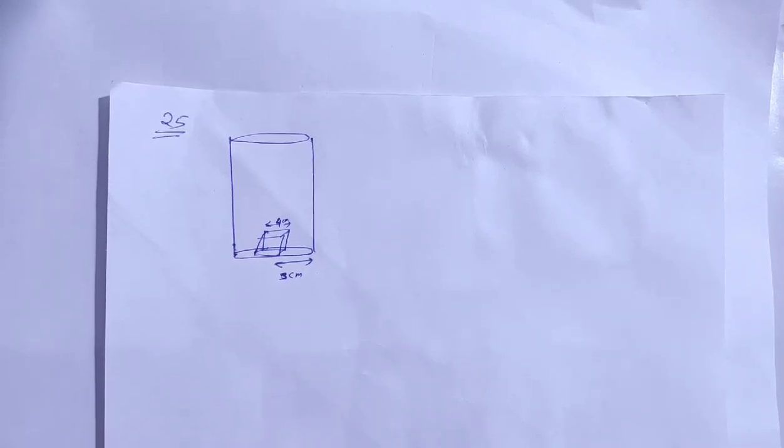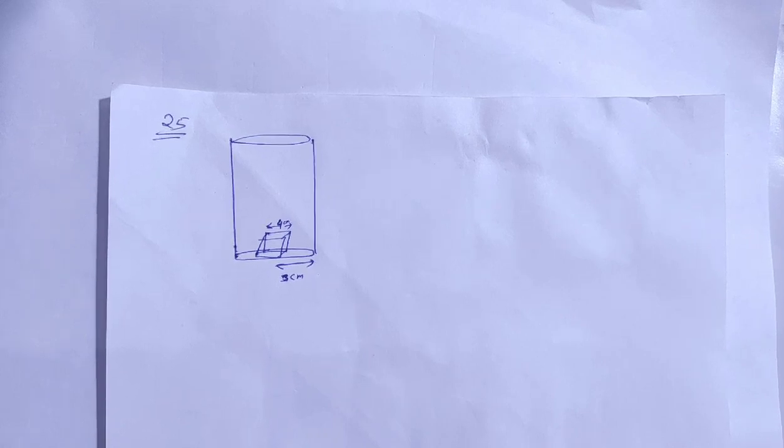HC Verma Solution, Chapter 13 Fluid Mechanics, Question Number 25. A cube of ice of edge 4 cm is placed in an empty cylindrical glass of inner diameter 6 cm. Assume that the ice melts uniformly from each side so that it always retains its cubical shape. Remembering that ice is lighter than water, find the length of edge of ice cube at the instant it just leaves contact with the bottom of the glass.